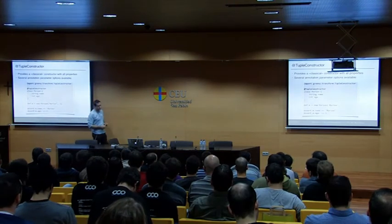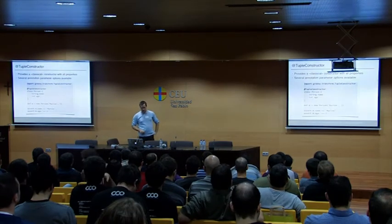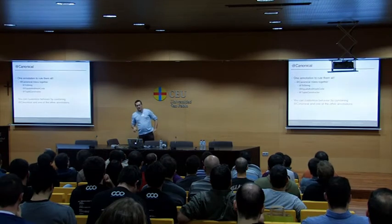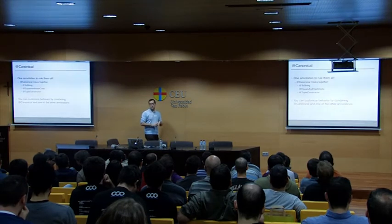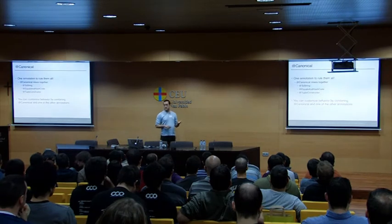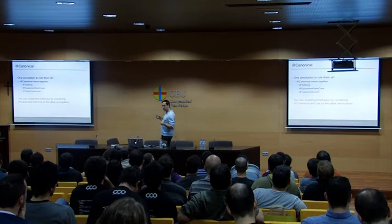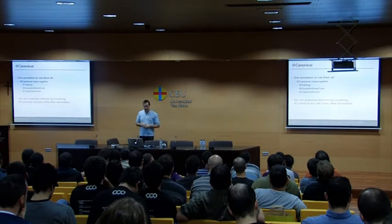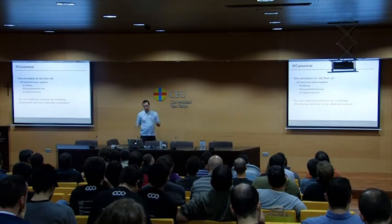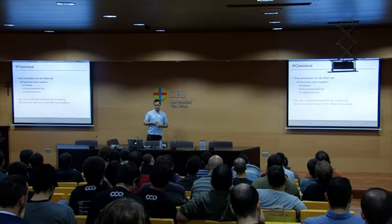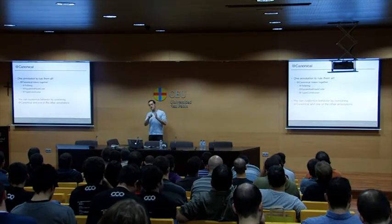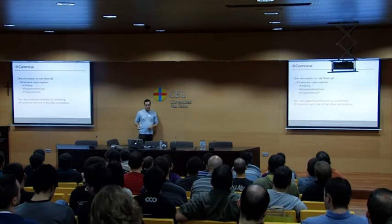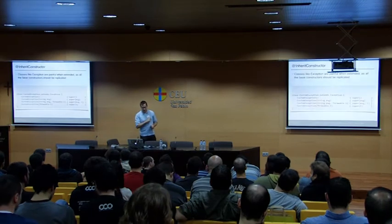You can use @ToString, @EqualsAndHashCode, and @TupleConstructor together with the @Canonical transform, which mixes those three together. It's like @Immutable but for mutable classes — @Immutable does the same work as @Canonical but for immutable structures. You can also customize behavior by combining @Canonical with @ToString if you use both annotations together.